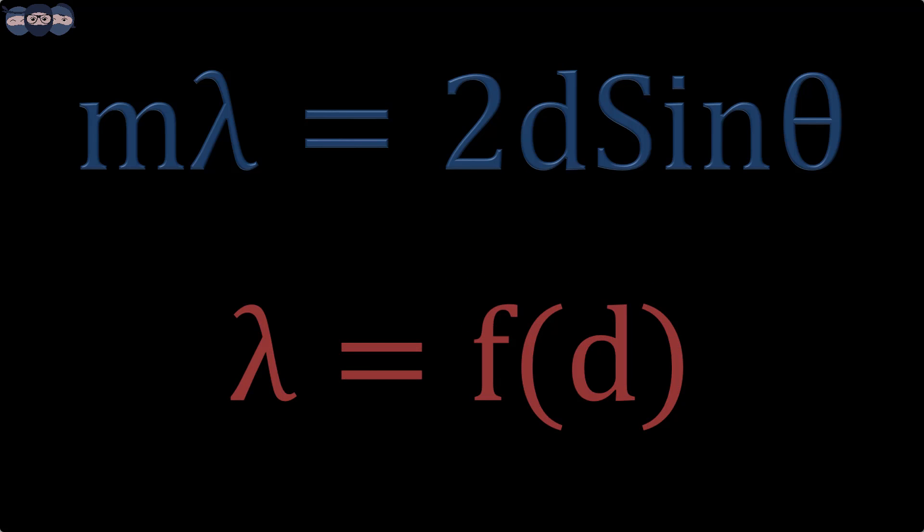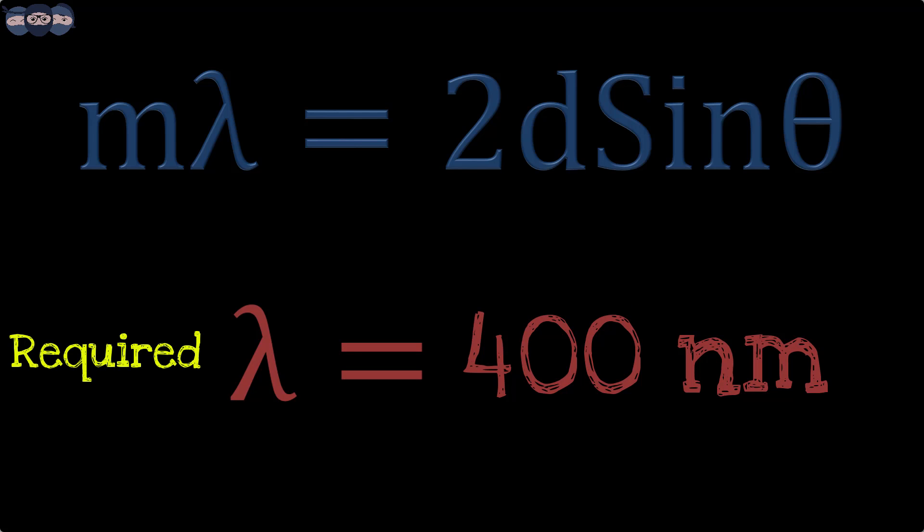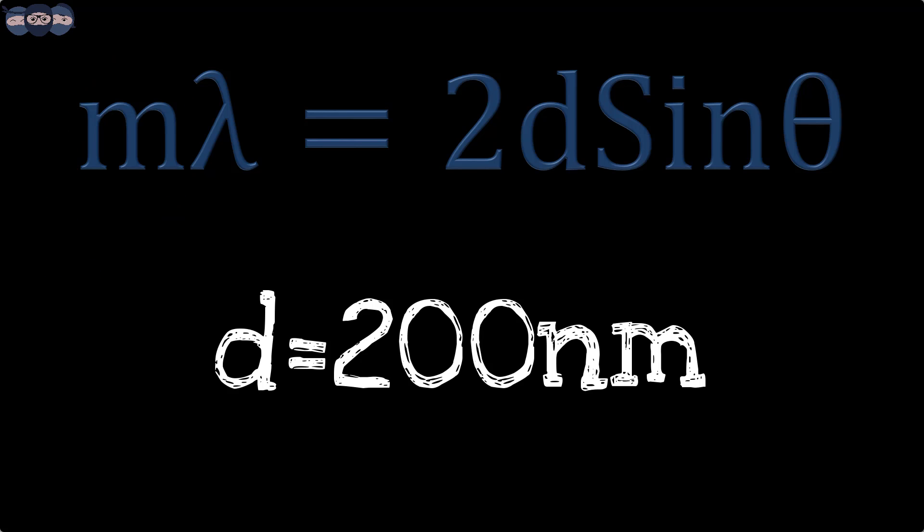By adjusting this thickness, one can select the required wavelength. Suppose one needs to design a filter that allows the radiation of 400 nm to pass. If the order of interference m is considered 1, then the thickness d of the spacer film should be 200 nm.